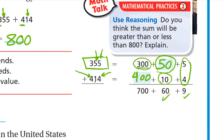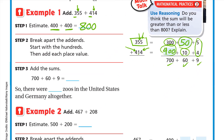And 300 plus 400 is 700. Step three: add the three parts — 700 plus 60 plus 9. Nine plus 60 is 69, and plus 700 gives us 769. So there were 769 zoos in the United States and Germany all together.